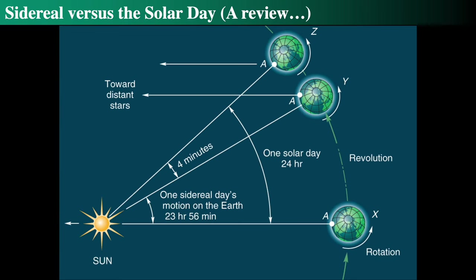So let's look at what we mean by a month. First, we're going to review the sidereal versus the solar day. The sidereal day is when the Sun comes back to the same position in the sky with respect to the distant stars, but the solar day is when the Sun comes back to due south at noon. The Sun will change its position with respect to the distant stars because the Earth is going around the Sun.